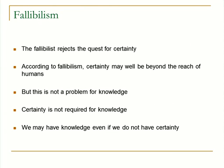For the fallibilist, we don't need to search for certainty — we should reject this demand for certainty. The fallibilist simply accepts that as humans we're fallible, that we may not be capable of certainty, that we may never be able to get beyond fallible knowledge. The recognition of fallibility is not a problem for knowledge, because according to the fallibilist, certainty is not needed. We don't need certainty in order to have knowledge — even if we're not certain, we could still possess knowledge.